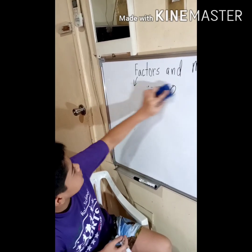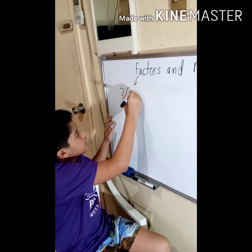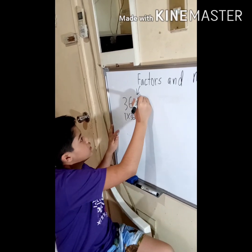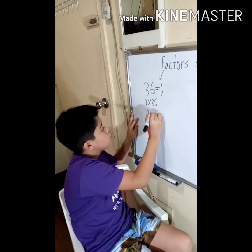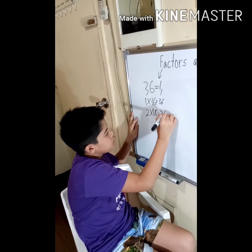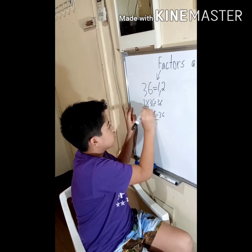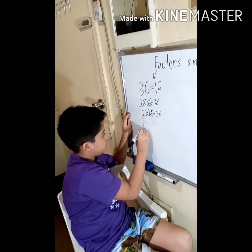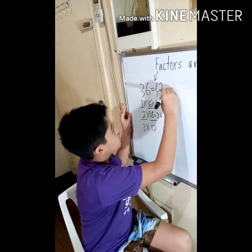Let's get another one: 36. The factors of 36 — of course, 1 and 36 are factors of 36. So 2 and 18 are also factors of 36.